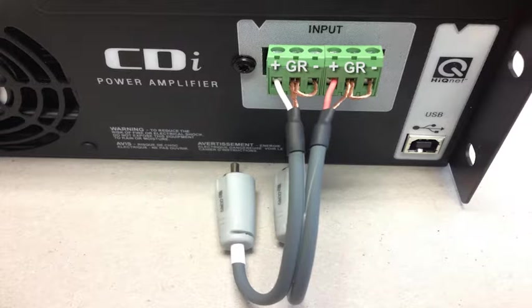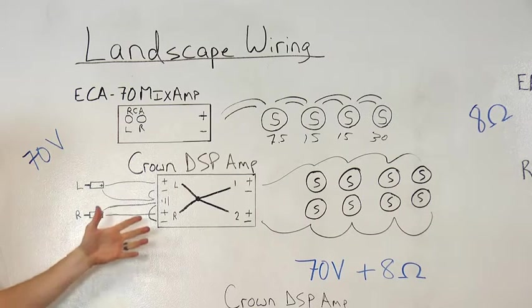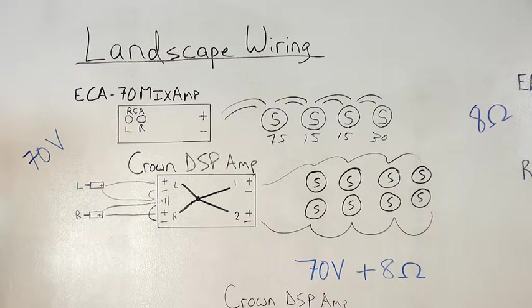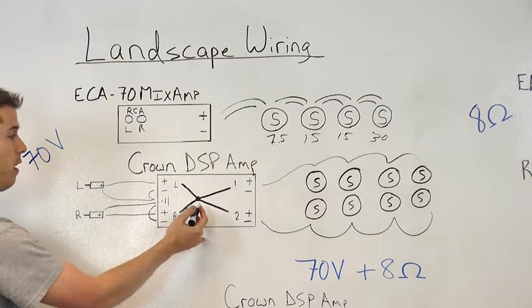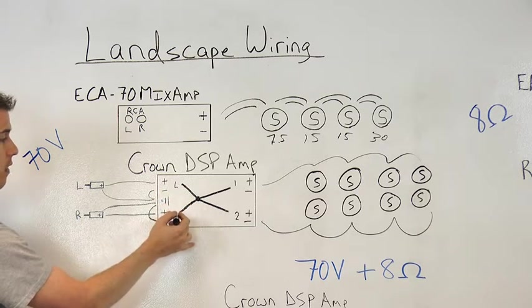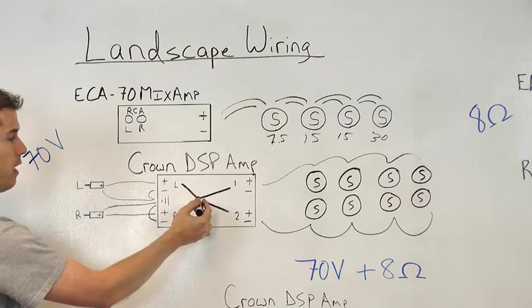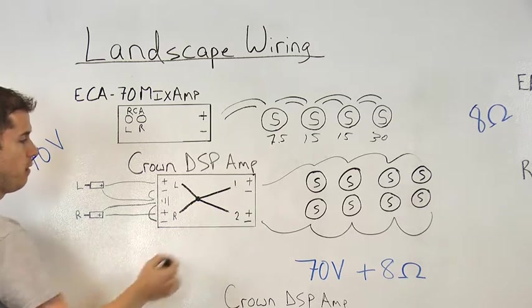You can see that we've added the right channel into this scenario because it's important when connecting a stereo source. Inside the amplifier it will actually take the left and the right channels and combine them and send that combined audio to channel 1 and channel 2.